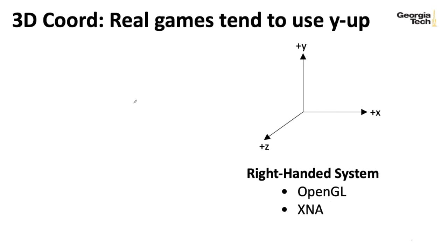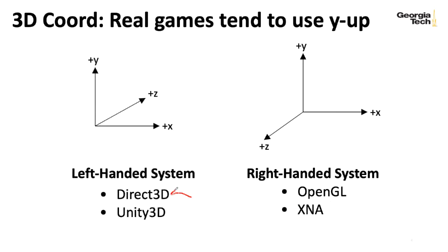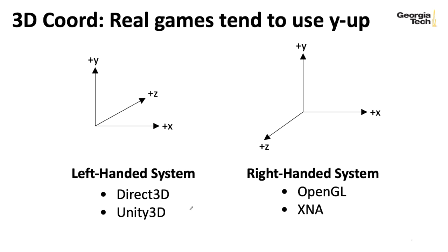There are also tools that use a left-handed coordinate system, such as Microsoft's Direct3D and the Unity software we'll be using in this class. With your left hand, your thumb points along the X axis, your index finger along the Y axis, and your middle finger goes along the Z axis but away from you. It always seemed odd that Microsoft created Direct3D as fundamentally left-handed, then created XNA built on top of it but switched to a right-handed system.